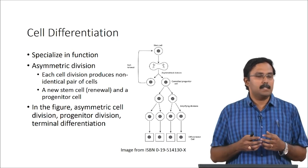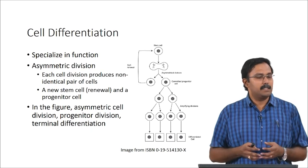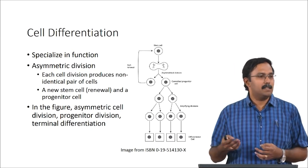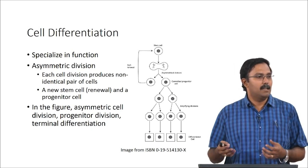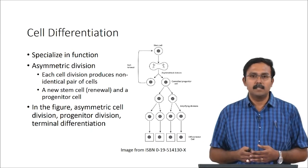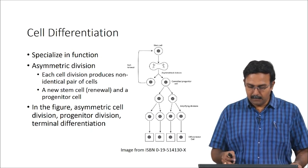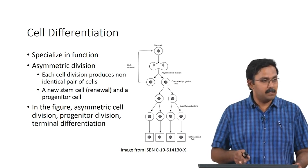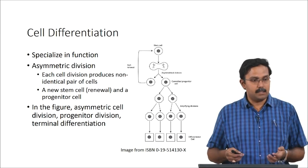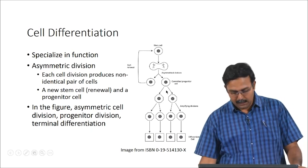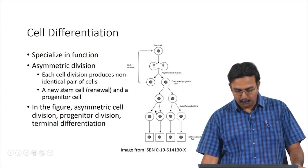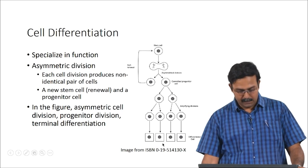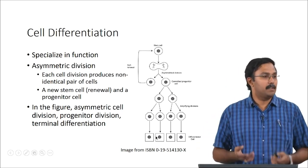These progenitor cells can then become more and more differentiated to form the final differentiated cell lines. Usually these progenitor cells multiply through regular cell division to form more progenitor cells which then get differentiated. This is because progenitor cells divide at a much faster rate compared to fully differentiated cells. The final step is terminal differentiation to form the fully differentiated cells.